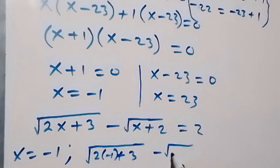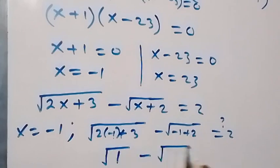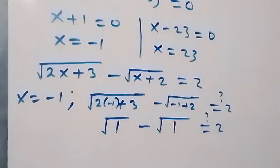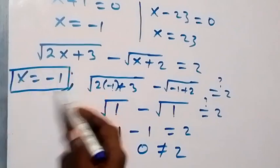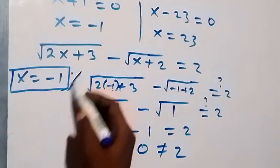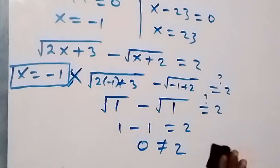Checking x equals minus 1: square root of 2 times minus 1 plus 3, minus square root of minus 1 plus 2, equals square root of 1 minus square root of 1, which is 1 minus 1 equals 0. Since 0 is not equal to 2, x equals minus 1 is an extraneous solution.